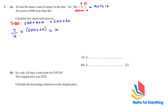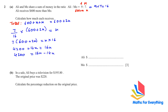Moving the denominator across, then expanding the bracket gives 16x. Shifting 14x to the other side with a sign change gives 4200 equals 2x. Dividing by 2 gives x equals 2100, so Mo receives 2100. Ali receives 600 more than Mo, which is 2700.